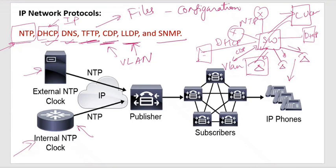CDP is Cisco proprietary and only works on Cisco switches, while LLDP works on other vendor switches. But even if it is not a Cisco switch — let's say some other vendor switch — the end devices will still need the VLAN information. In that case, CDP will not be the protocol; that will be LLDP. LLDP will be sharing the VLAN information.